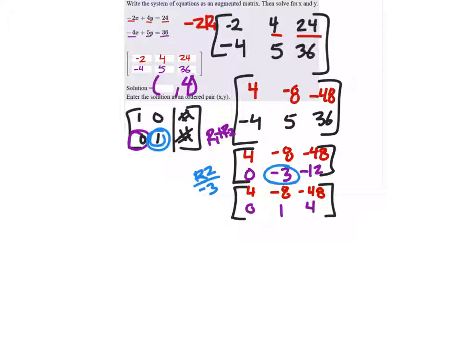Continuing on, I still want a 1 where that 4 is, right here. So I can take row 1 and divide it by 4. And as it turns out, all the other terms are divisible by 4 as well. So we're not going to end up with any fractions here. That's great.